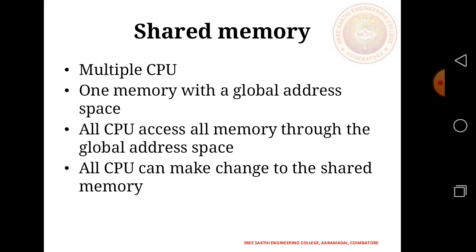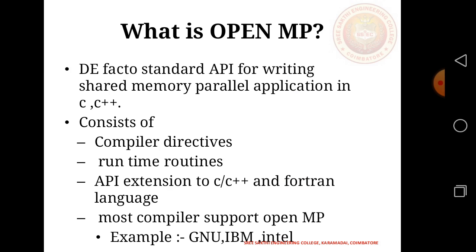All CPUs can make changes to the shared memory. What is OpenMP? OpenMP stands for an API for writing shared memory parallel applications in C and C++, consisting of compiler directives, runtime routines, and APIs. It supports execution in C and C++. Most compilers support OpenMP, for example GCC, IBM, and Intel compilers.